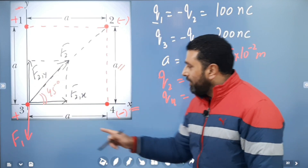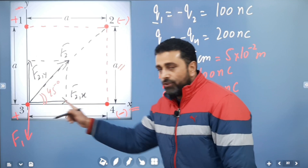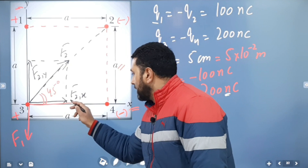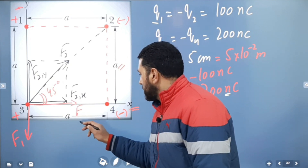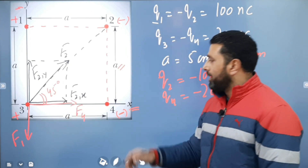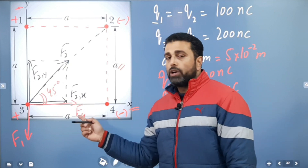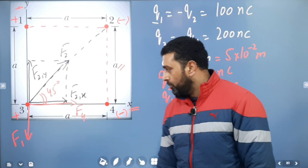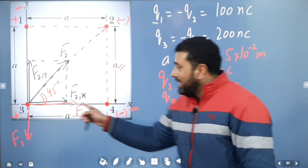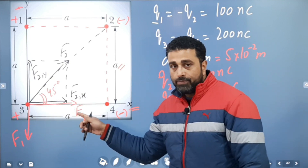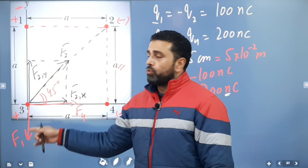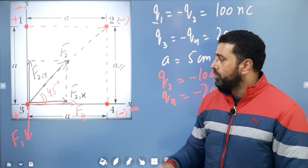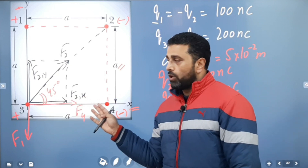Particle 4 exerts an attractive force — particle 4 is negative and particle 3 is positive — so that force will be directed along the positive X-axis. I'll call this F4. This force is already along the X-axis, so we don't have to resolve it; it only has an X component. So along the X-axis we have two forces, and along the Y-axis we have two forces.